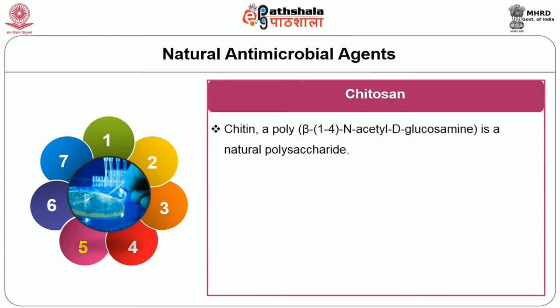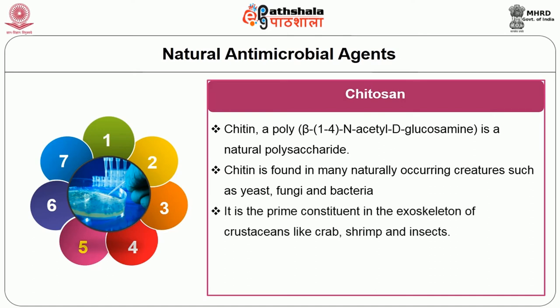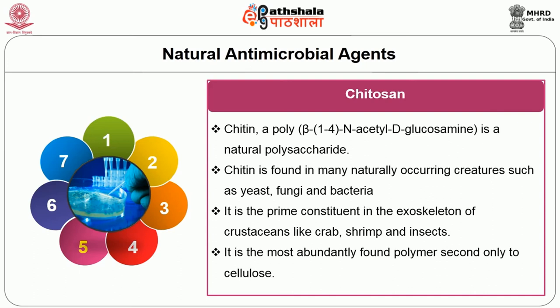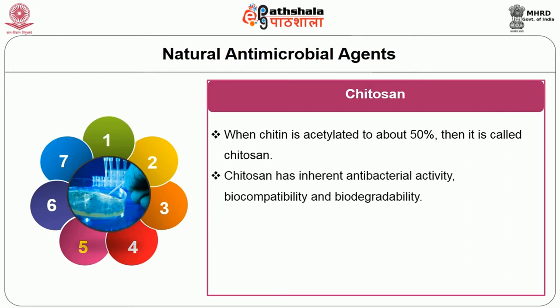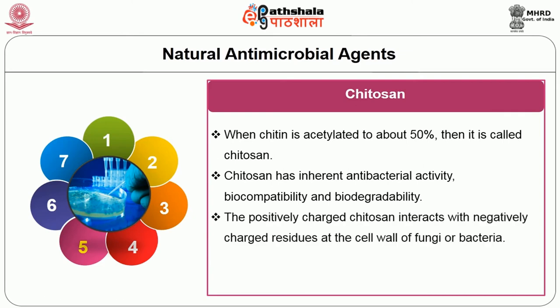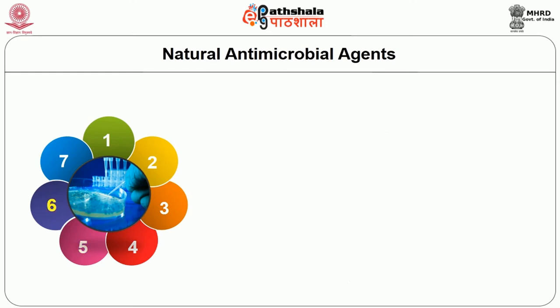Chitin, a poly-beta-1,4-N-acetyl-D-glucosamine, is a natural polysaccharide found in many naturally occurring creatures such as yeast, fungi and bacteria. It is a prime constituent in the exoskeleton of crustaceans like crab, shrimp and insects. It is the most abundantly found polymer second only to cellulose. When chitin is deacetylated to about 50%, it is called chitosan. Chitosan has inherent antibacterial activity, biocompatibility and biodegradability. The positively charged chitosan interacts with negatively charged residues at the cell wall of fungi or bacteria. This interaction changes cell permeability and causes leakage of intracellular substances.